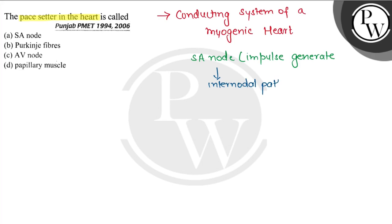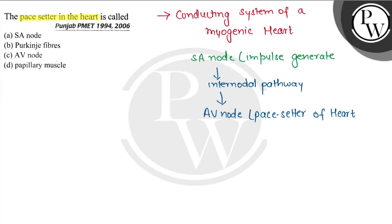Where will it reach? It reaches the AV node. AV node, we call the pacemaker of the heart. This impulse can generate, but at a rate of 40 to 45 per minute.